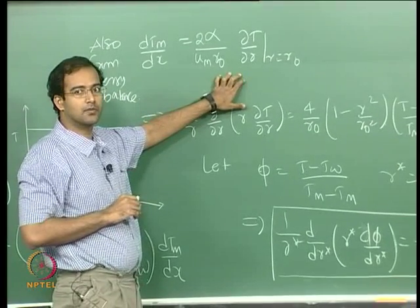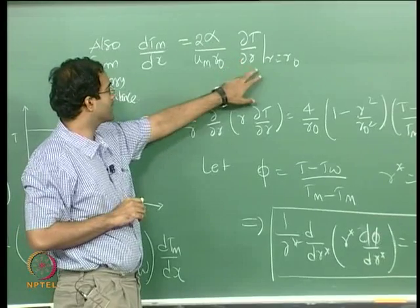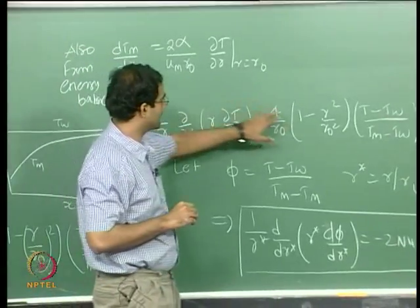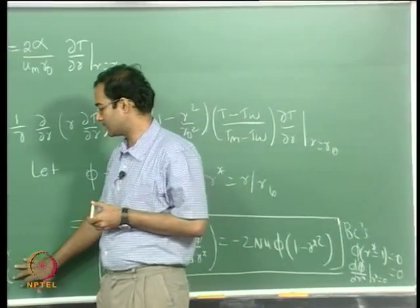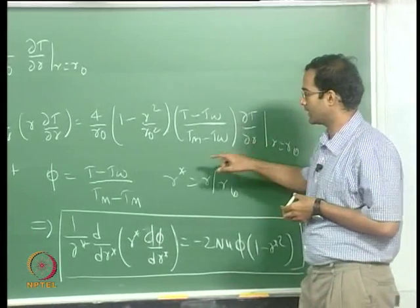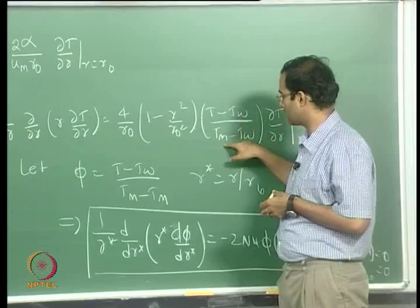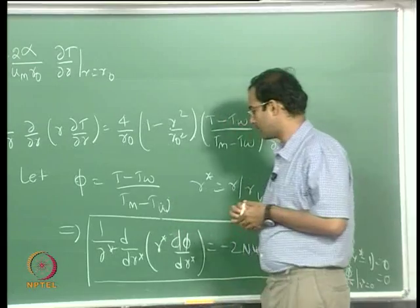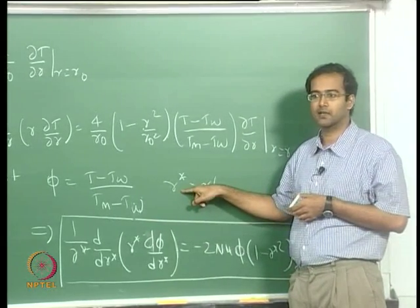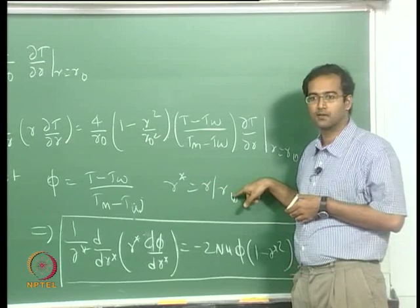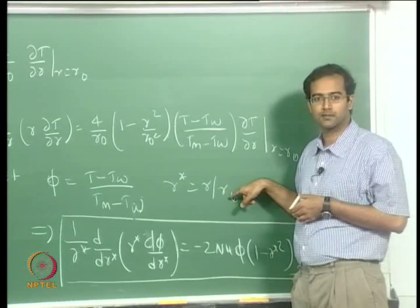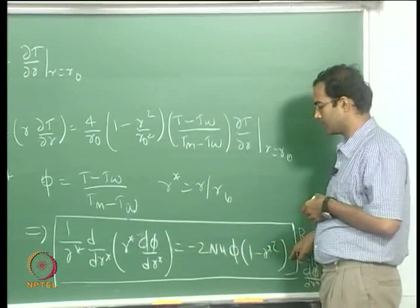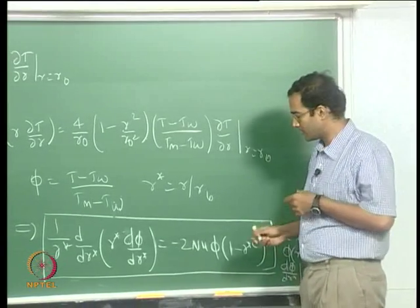From energy balance, DT_M/DR can be related in terms of the wall heat flux as DT/DR at R equal to 0. When I substitute that into the earlier energy equation, I have an equation where phi denotes (T - T_wall)/(T_mean - T_wall). I can also non-dimensionalize the radial coordinate by introducing R* = R/R_0, where R_0 is the radius of the duct. The final resulting expression, after substitution, comes out as one ODE.